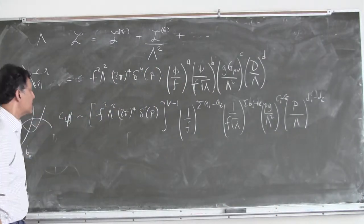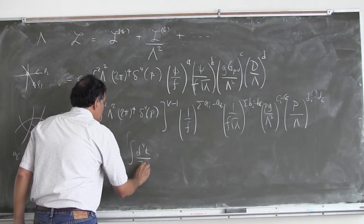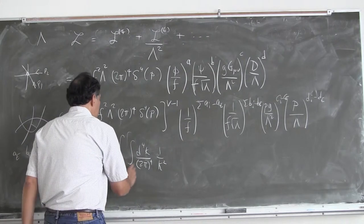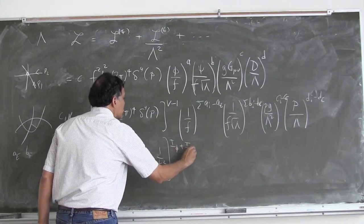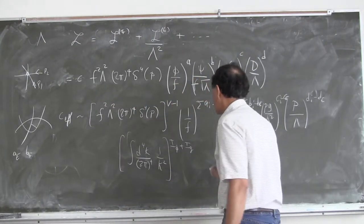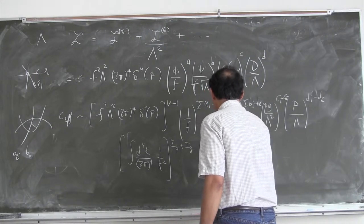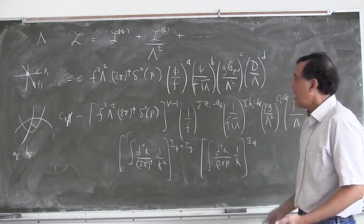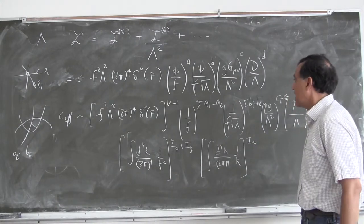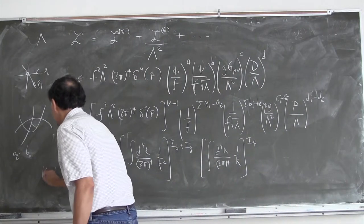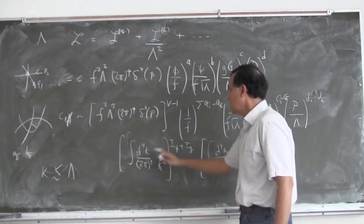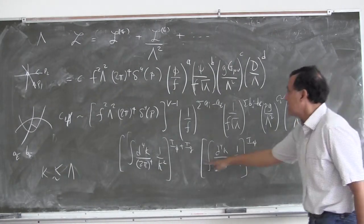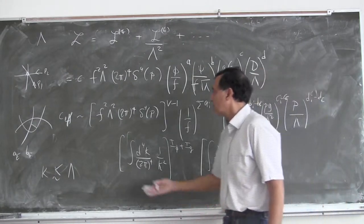I left out the internal propagators: I get d⁴k/(2π)⁴ times 1/k² for each internal scalar line. That covers the number of internal phi lines plus internal gauge lines. The fermion propagators go like 1/k, so I get d⁴k/(2π)⁴ times 1/k to the number of internal fermion lines. I'm doing dimensional analysis, and the effective theory is valid for momenta less than lambda, so I cut off all the integrals at order lambda. As a result, all the remaining momenta get controlled by this cutoff lambda.